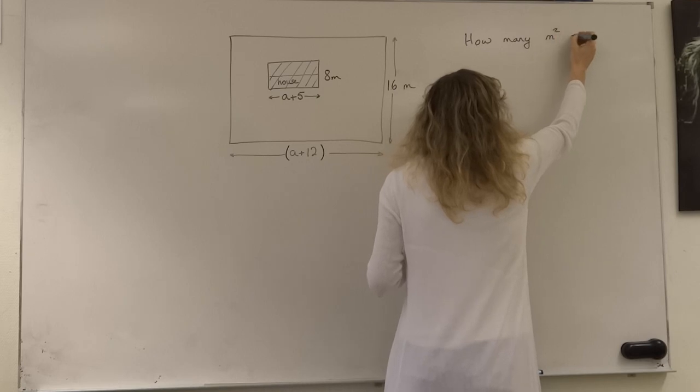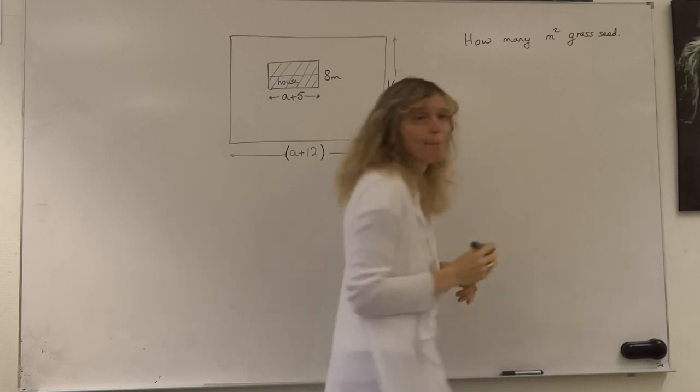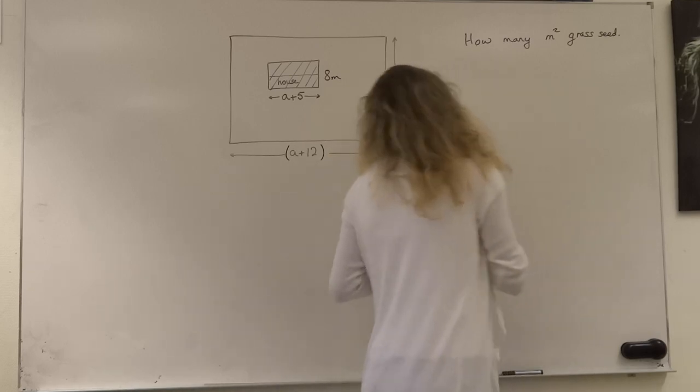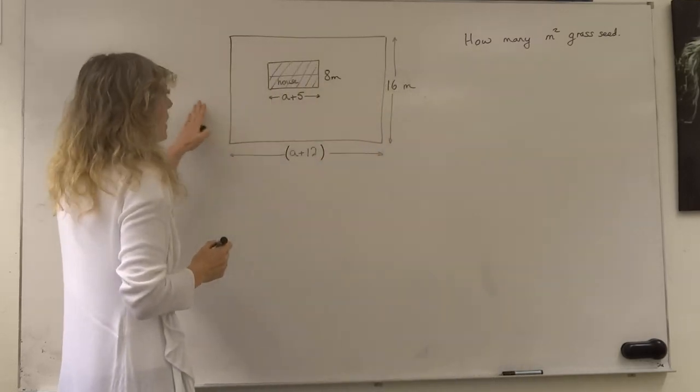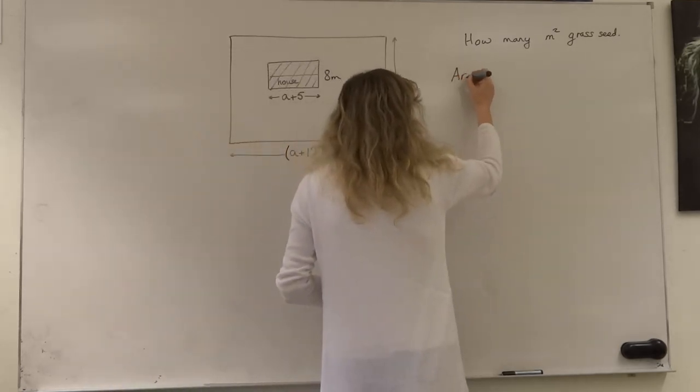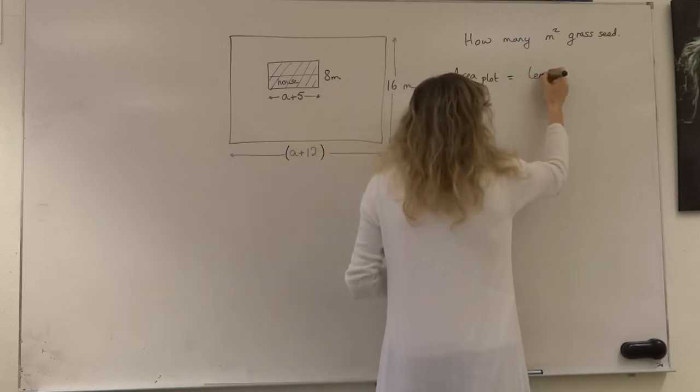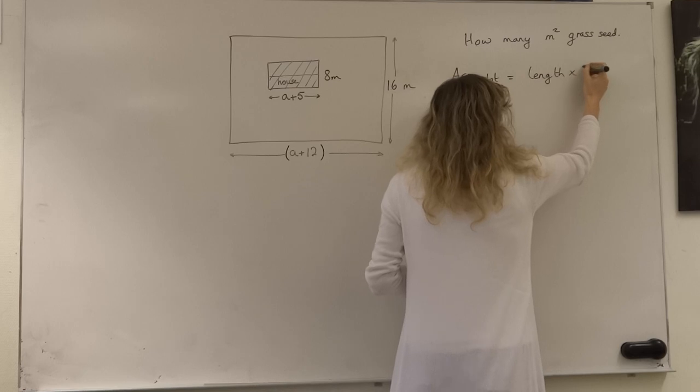And in order to do that, we have to think, well, what's the area of our whole garden? The area of the whole plot is length times breadth.